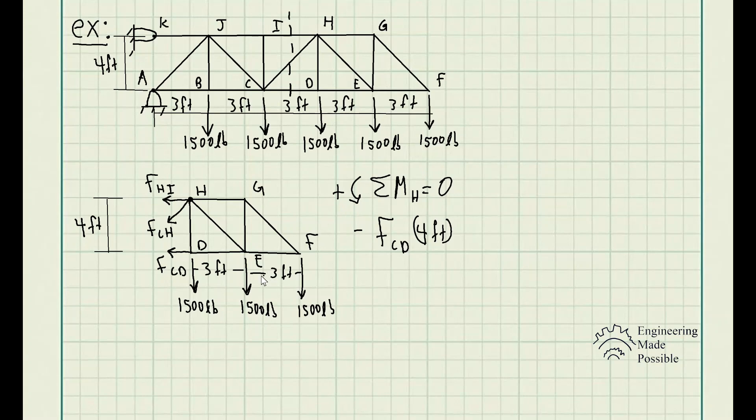And we have the external forces, the 1,500 pounds that are being applied to this structure. So we have this 1,500, this 1,500 basically producing a moment about point H. But this 1,500 at this end, since it's right at that point, is not causing any rotation with respect to point H. So this one, we don't have to include it when it comes to the sum of moments with respect to point H.